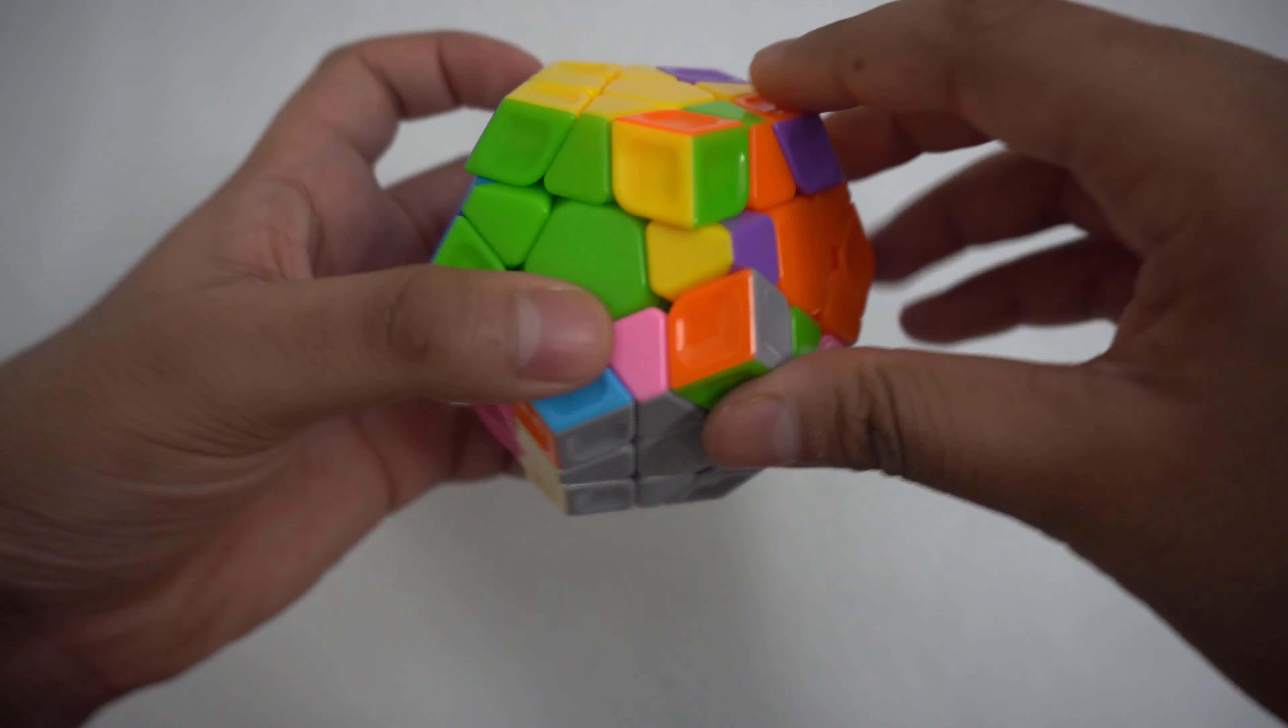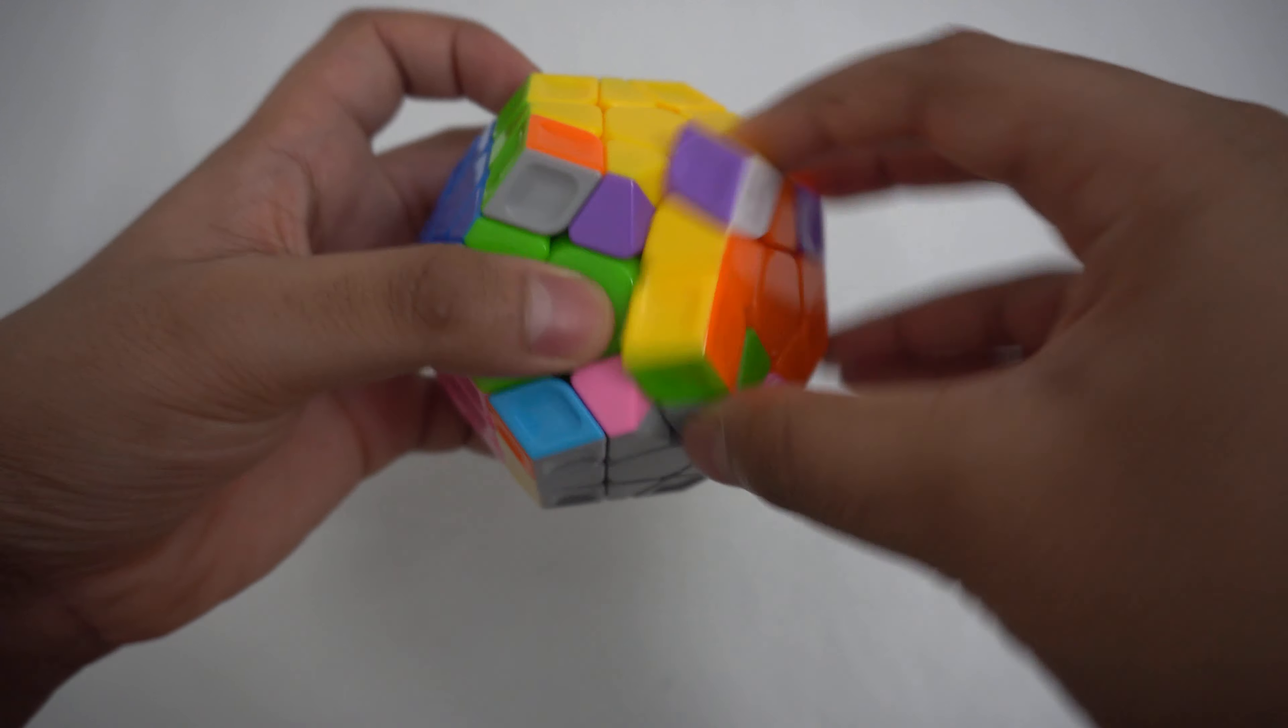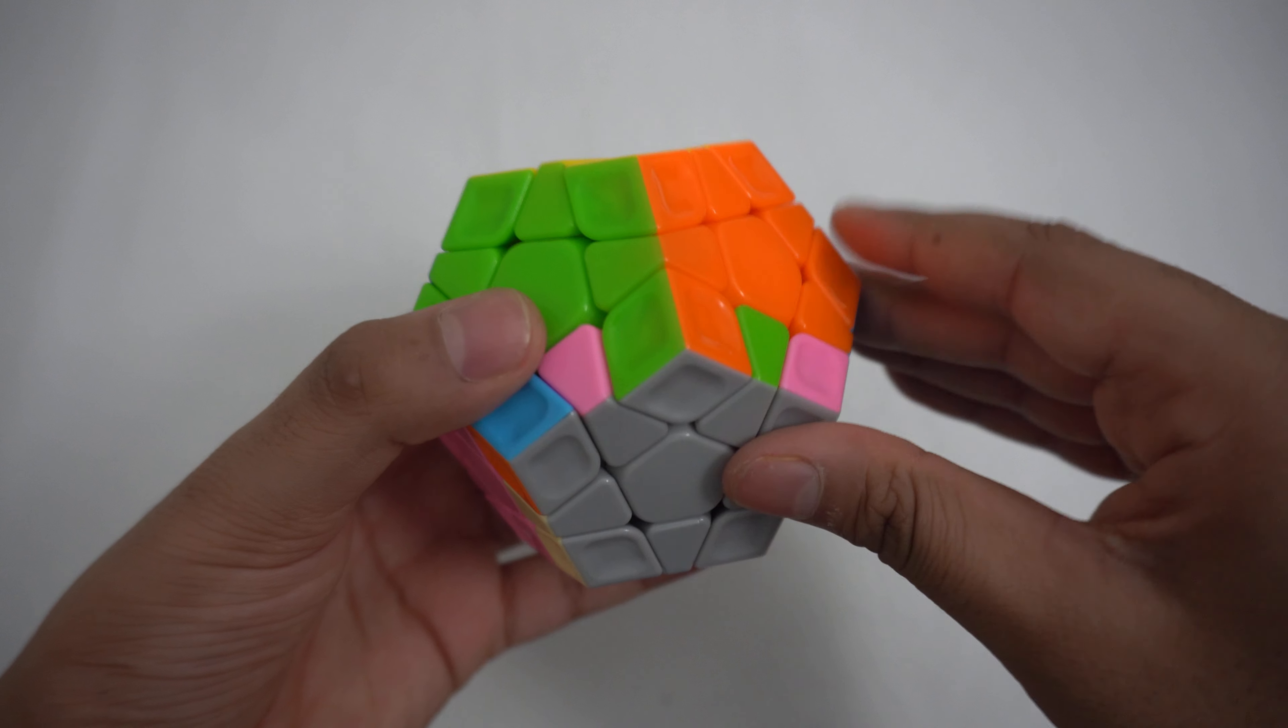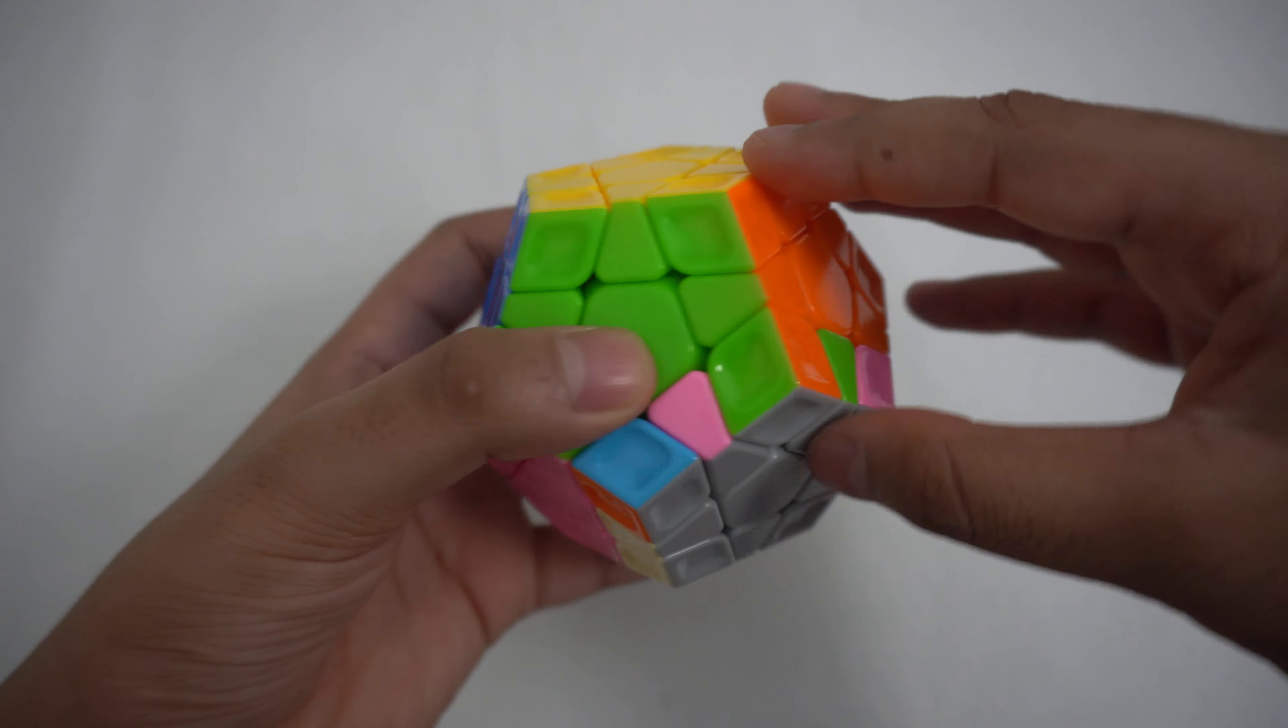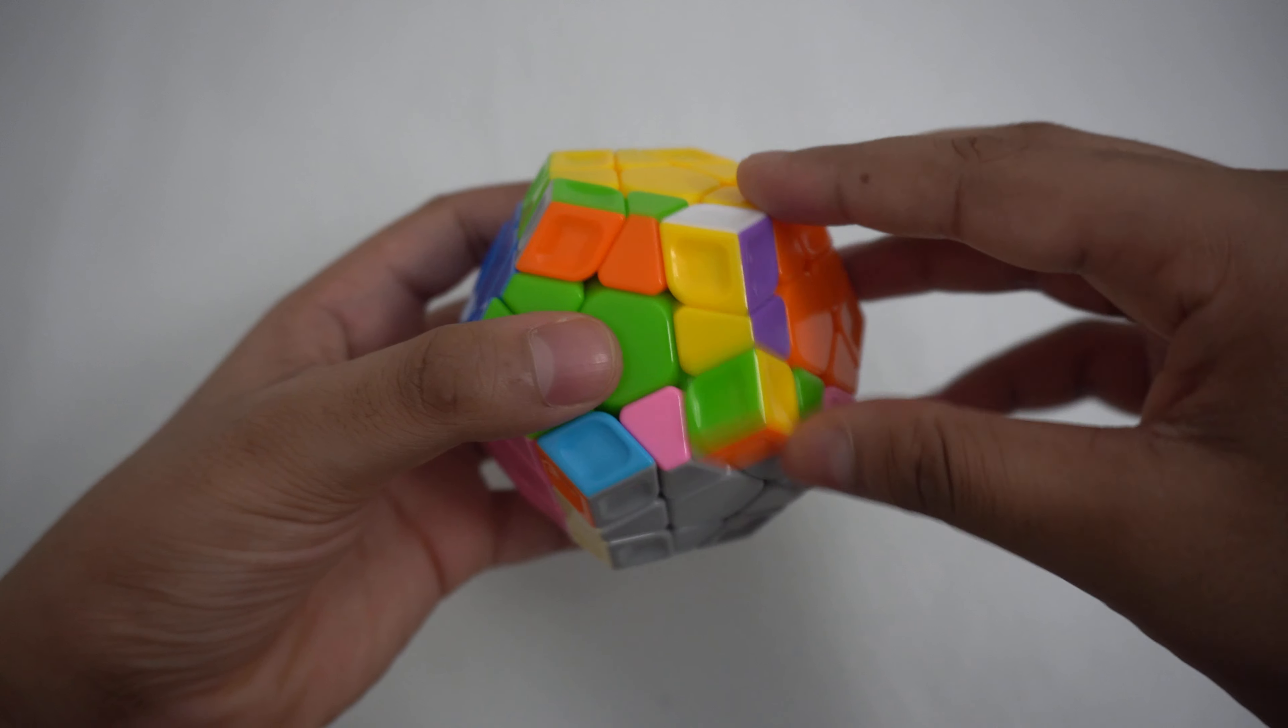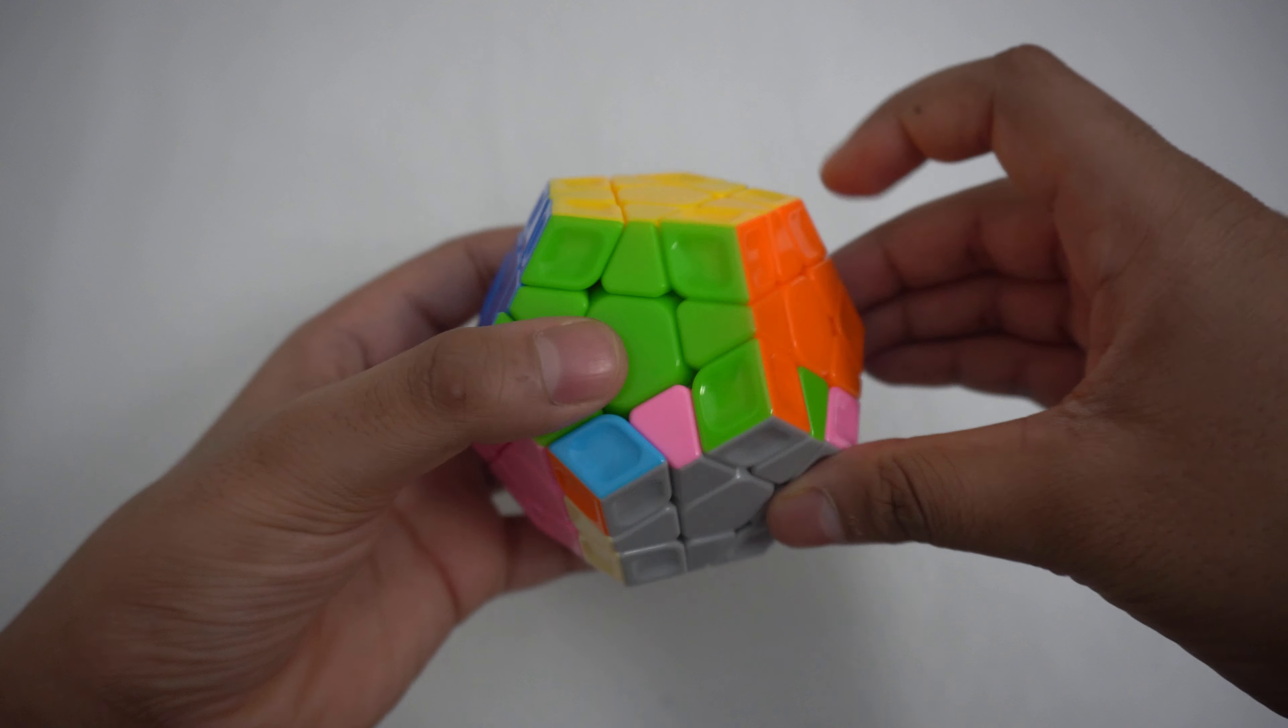Now all we need to do is switch the edge pieces so that we can solve the Megaminx. For this step, we'll be using two moves. R U R prime to take out an edge piece and R U prime R prime to put it back.